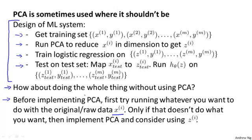And only if that doesn't do what you want, then implement PCA and consider using z. So before using PCA, instead of reducing the dimension of the data, I would consider, let's ditch this PCA step. I would recommend instead of putting PCA into the algorithm, just try doing whatever it is you're doing with the XI first. And only if you have a reason to believe that doesn't work, only if your learning algorithm ends up running too slowly, or only if the memory requirement or the disk space requirement is too large, so you want to compress your representation. Only if using the XI doesn't work, only if you have evidence or a strong reason to believe that using the XI won't work, then implement PCA and consider using the compressed representation.